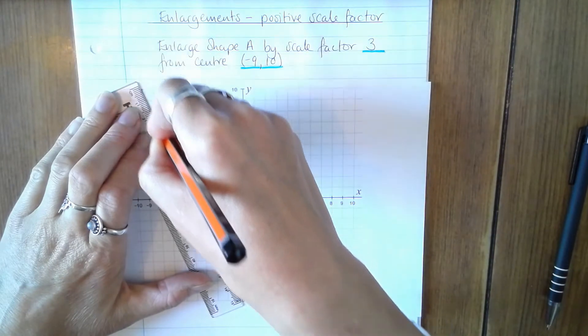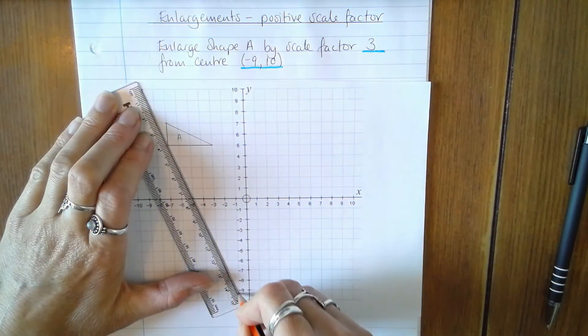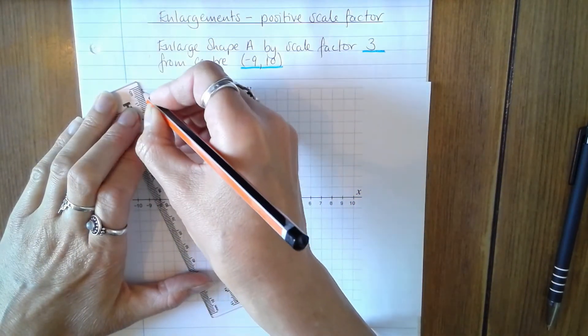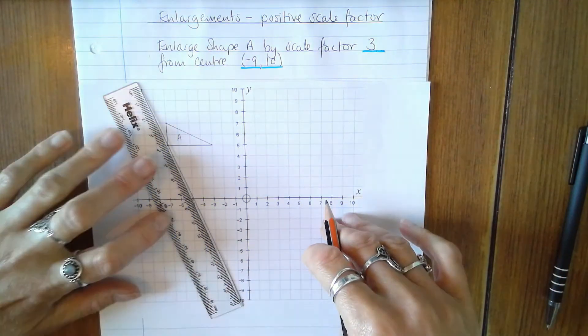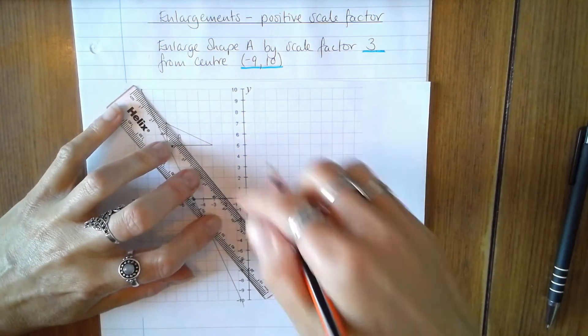Take care when placing your ruler that both of those points lie exactly on the ruler, because these guidelines are very difficult to get completely accurate.